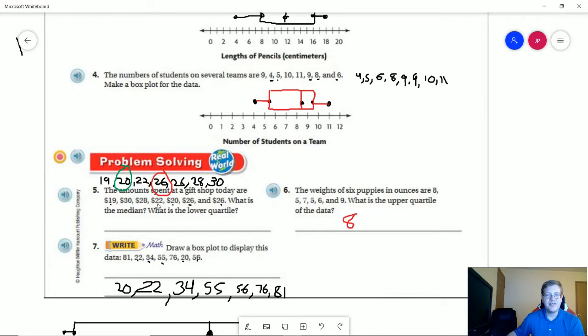Number five, we have all of these numbers put in order. We are going to have seven numbers, so I've circled the median, which would be 26, and our lower quartile I circled in green, which would be 20. So 26 and 20 would be our two answers for that.